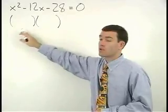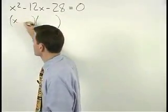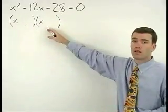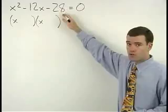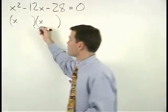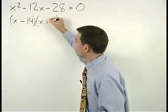As our first term for each binomial, we have the factors of x squared, x times x. And as our second term for each binomial, we have the factors of negative 28 that add to negative 12, which are negative 14 and positive 2.